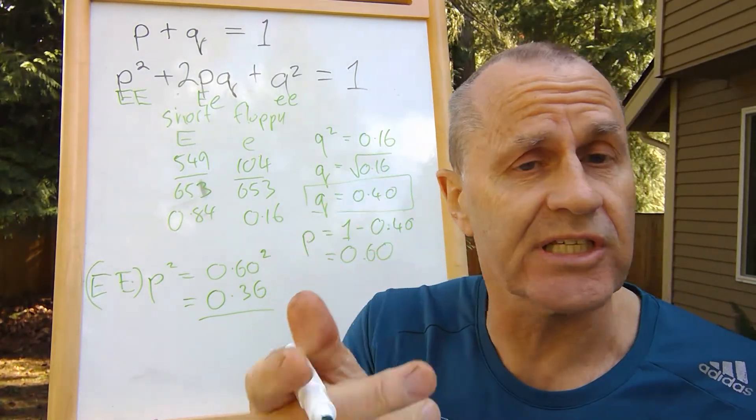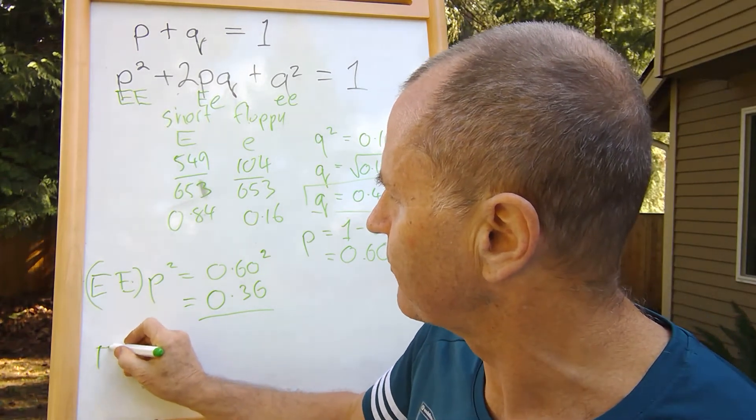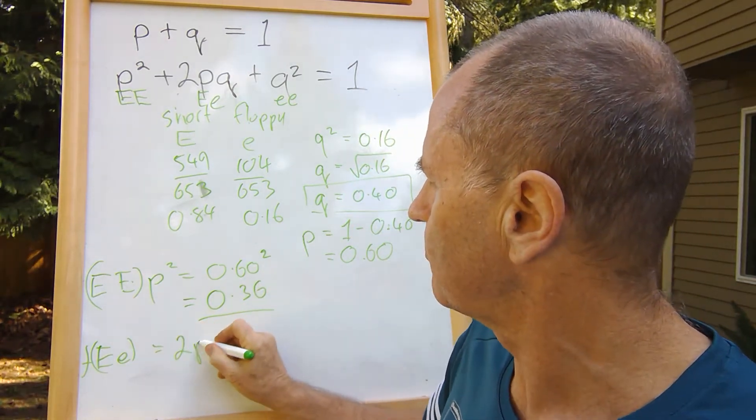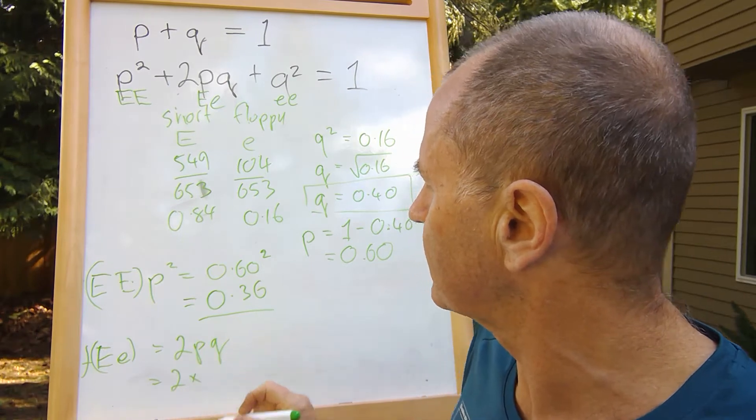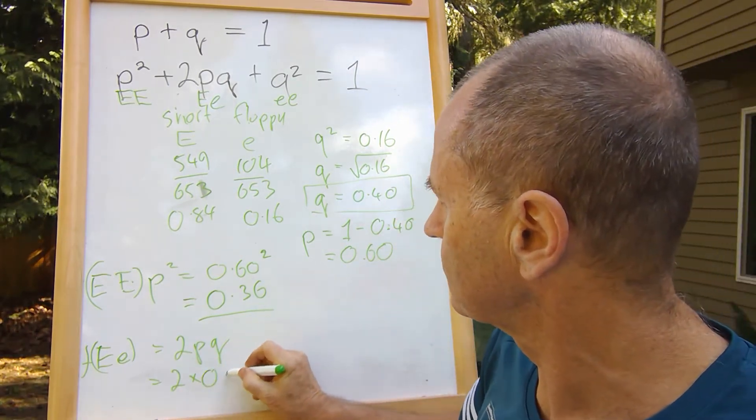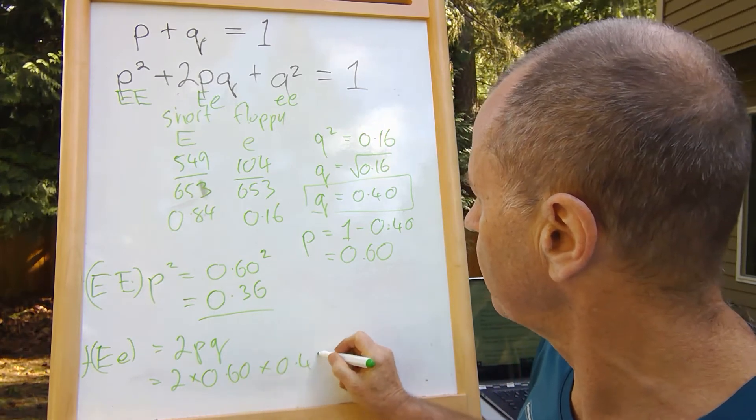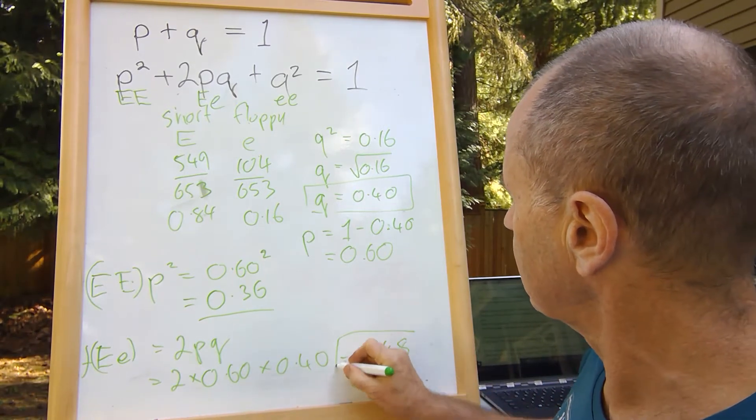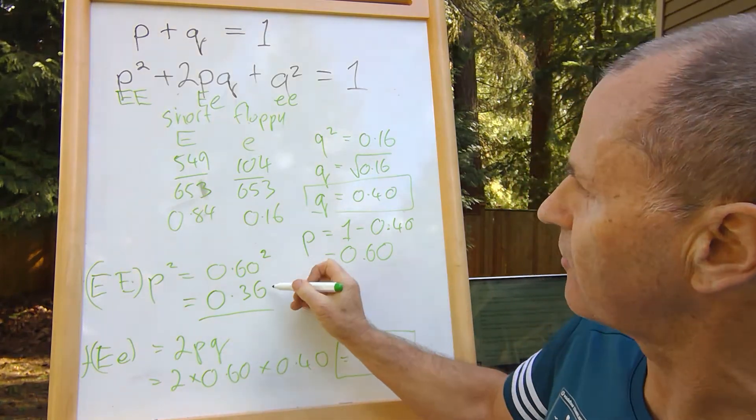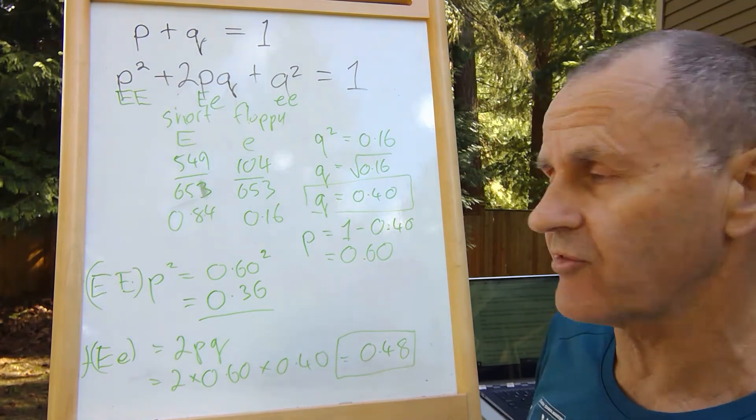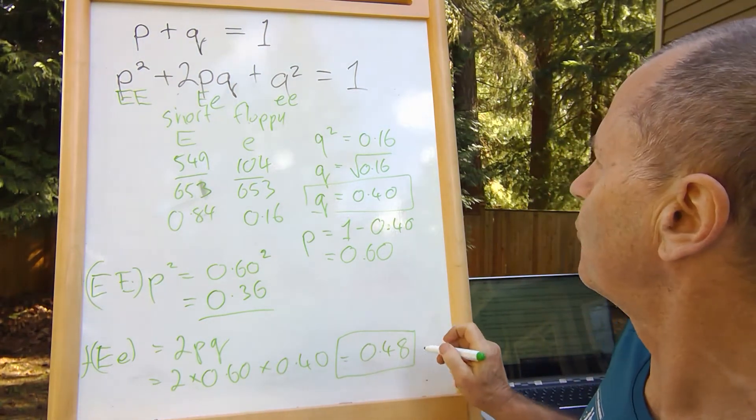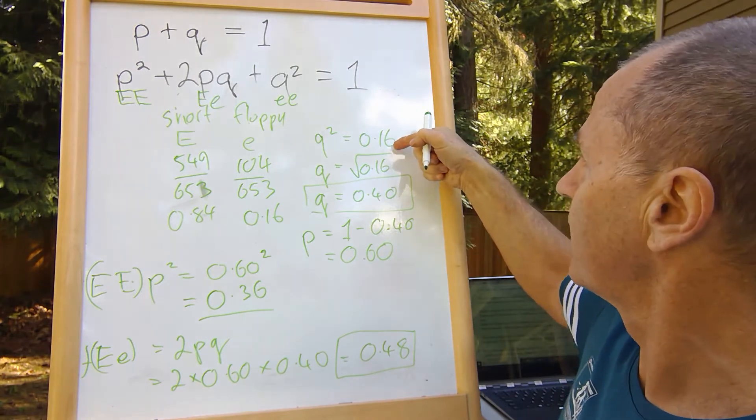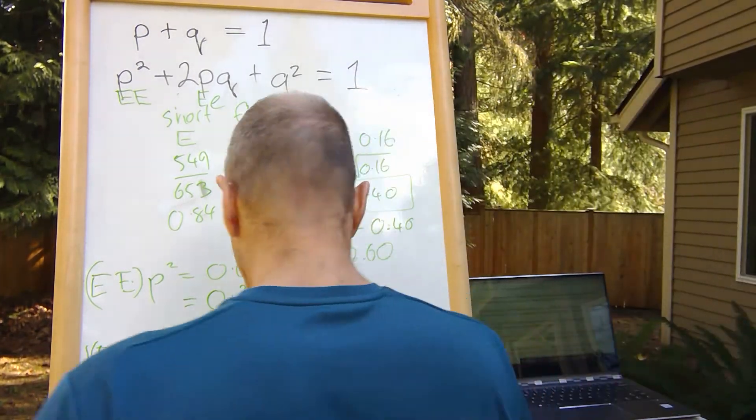Then we work out the frequency of heterozygous individuals. The frequency equals 2pq, which equals 2 times the frequency of p times the frequency of q. 6 times 4 is 24, times 2 equals 0.48. So the frequency of homozygous dominant is 0.36, the frequency of heterozygous is 0.48, and the frequency of homozygous recessive is 0.16.